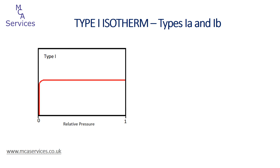Historically, the type 1 isotherm was synonymous with materials such as activated carbons — highly microporous materials with very high specific surface areas. With improvements in analytical capabilities, the quality and definition of recorded adsorption isotherms has increased, coupled with more classes of microporous materials being developed. This has led to the realisation that porosity may be confined to the micropore region, or it can extend into the mesopore region. Consequently, it is now common to divide the type 1 isotherm into two subtypes.